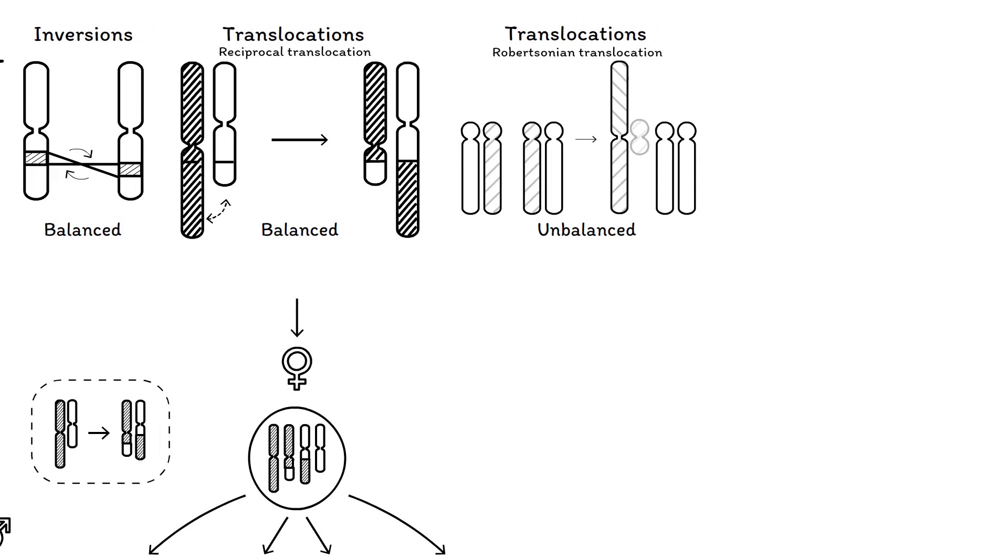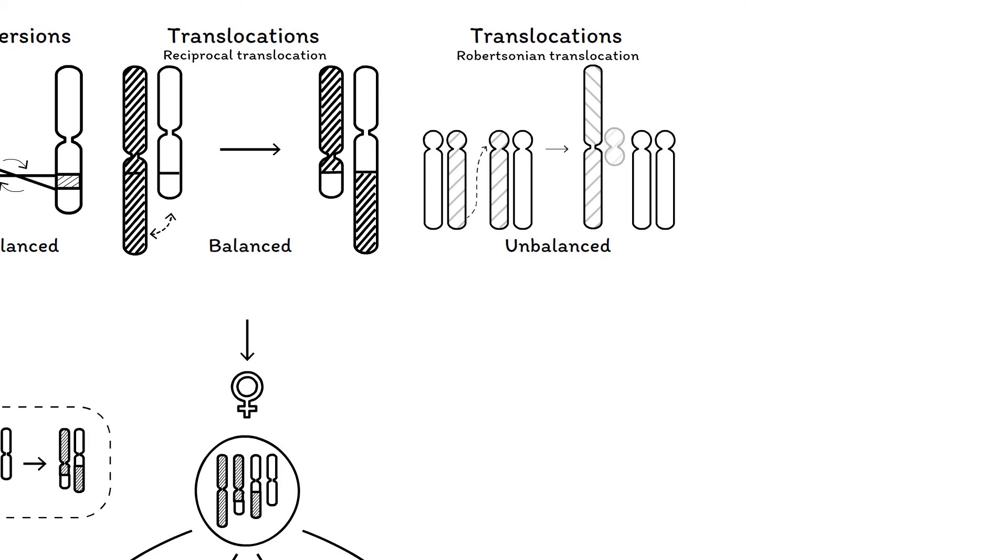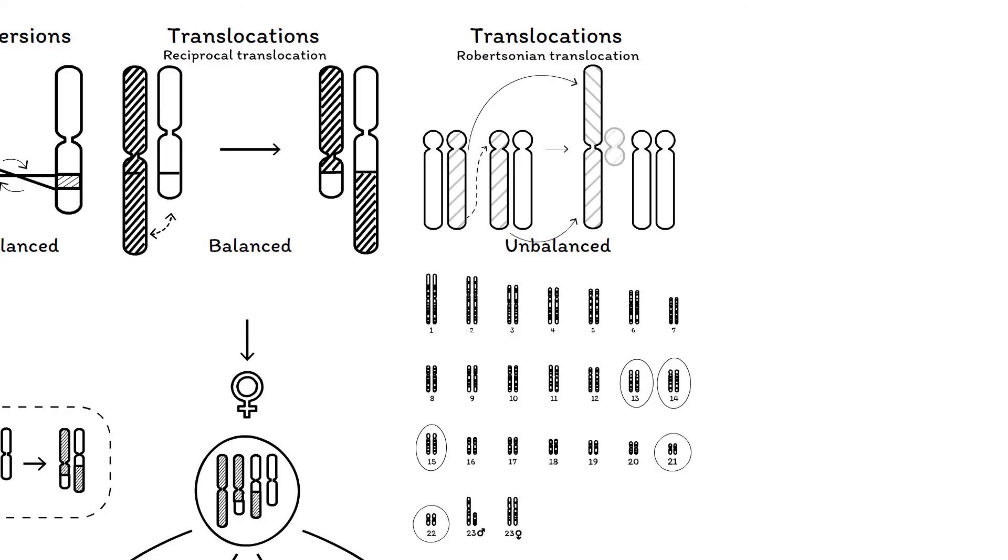Unbalanced translocations include Robertsonian translocations, a one-way transfer from one chromosome to another homologous or non-homologous chromosome. Here, the long arms of two acrocentric chromosomes, which are chromosomes 13, 14, 15, 21, or 22, fuse with each other. However, the short arms of both chromosomes are lost in this process.